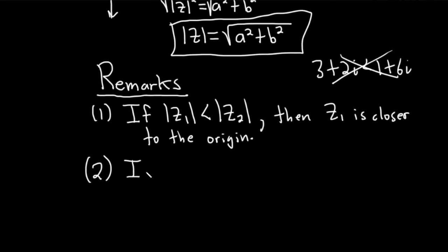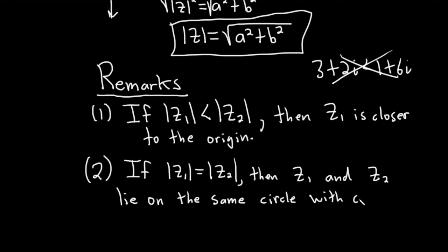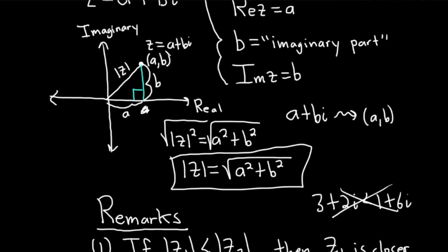What happens if they're equal? If the modulus of z₁ is equal to the modulus of z₂, then they're both equidistant from the origin in the complex plane, so they lie on a circle of the same radius — z₁ and z₂ lie on the same circle with center at the origin. If you have another complex number that's the same distance, you can draw a circle, and they're both going to lie on that circle because they're both equidistant from the origin.